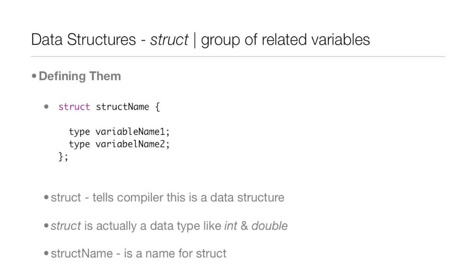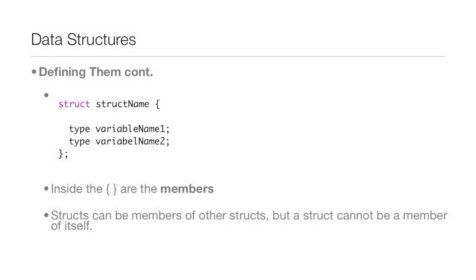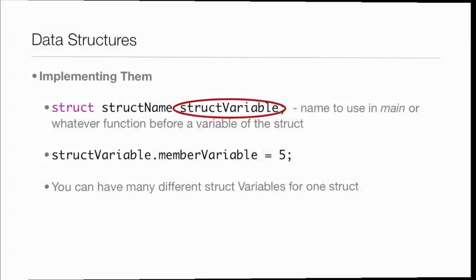In Keynote, going over data structures — what are they? They're just a group of related variables. You define them using 'struct', which tells the compiler this is a data structure. Struct is a data type like int or double, and you give it a name. Inside the braces are the different members, the member variables. A struct can be a member of another struct, but a struct cannot be a member of itself. After the last brace, close it with a semicolon.